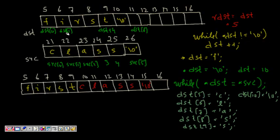Let's look at one example. The destination character array starts at memory location 5 and goes through 16 — so many bytes from 5 to 16 are occupied for destination. Source is a character array starting at 21 till 26, and it has 'class'. So location 21 is source[0], 22 is source[1], etc. When we set `r_dst = dst`, it becomes equal to memory location 5.